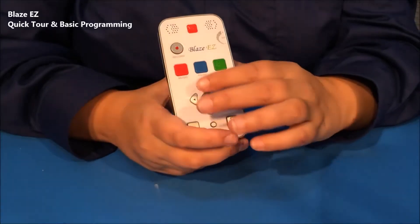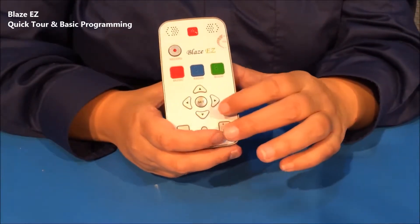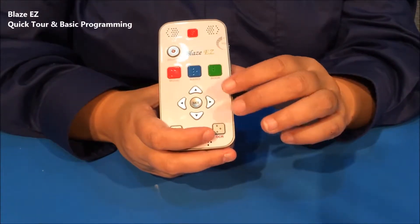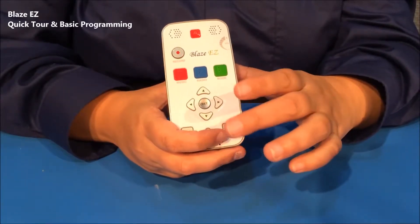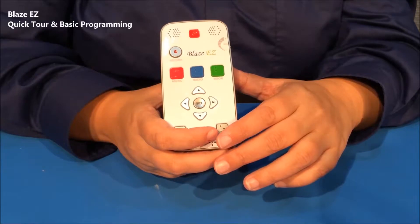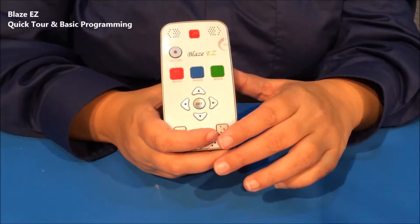Below these buttons is the navigation pad. The navigation pad has four arrows and a round select button in the middle. Of course, you use the arrows for navigation and the select button just does what its name implies. It selects the current item.